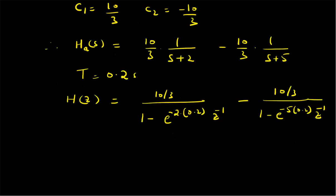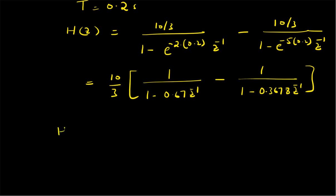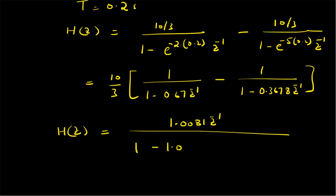Upon simplification, this becomes (10/3) · [1/(1 - 0.67·z⁻¹)] - [1/(1 - 0.3678·z⁻¹)]. By doing simple algebra, H(z) = 1.0081·z⁻¹ / (1 - 1.0381·z⁻¹ + 0.2465·z⁻²). This is the final system function of the digital IIR filter.